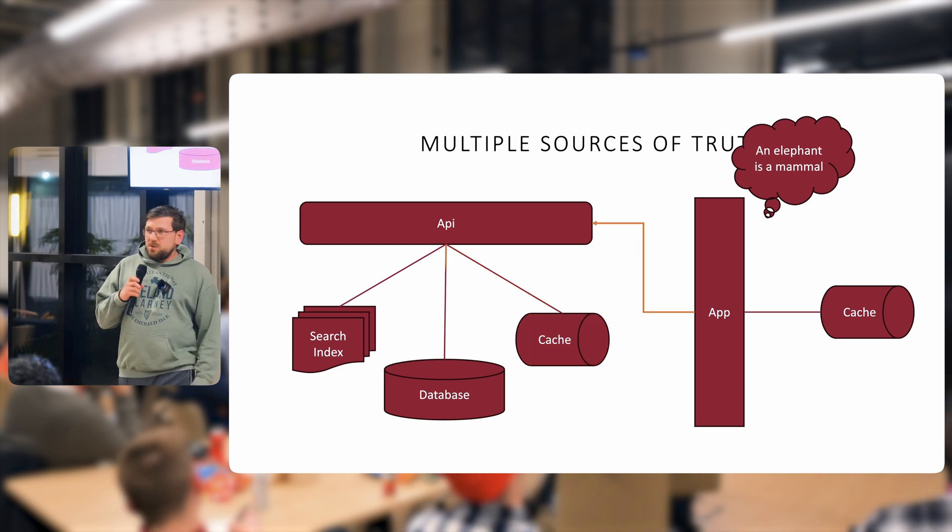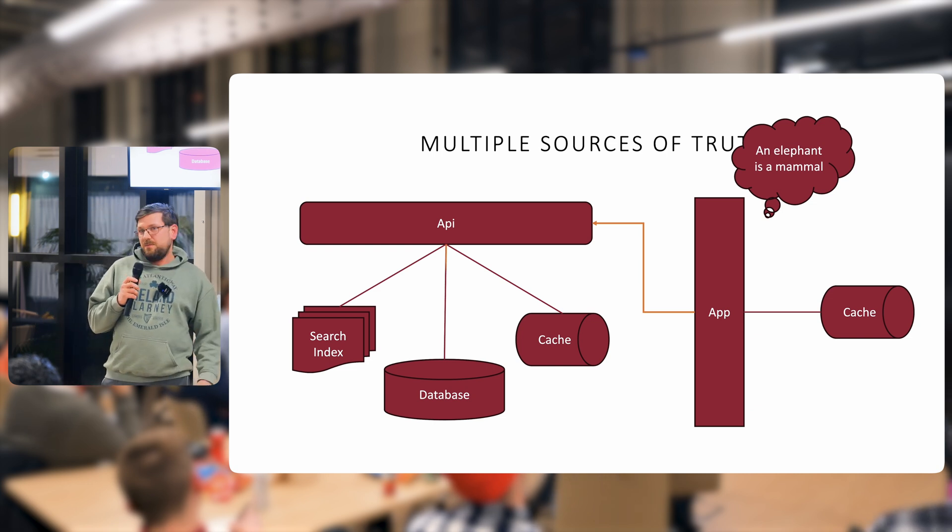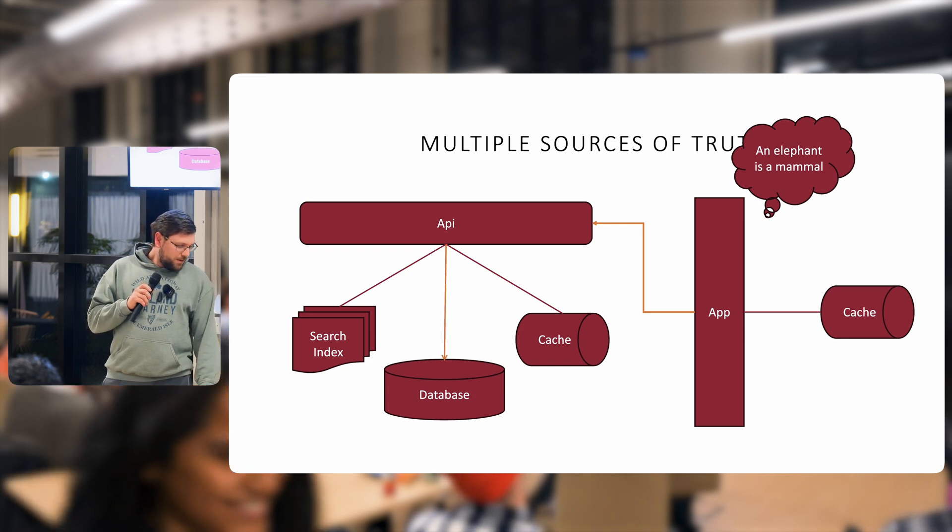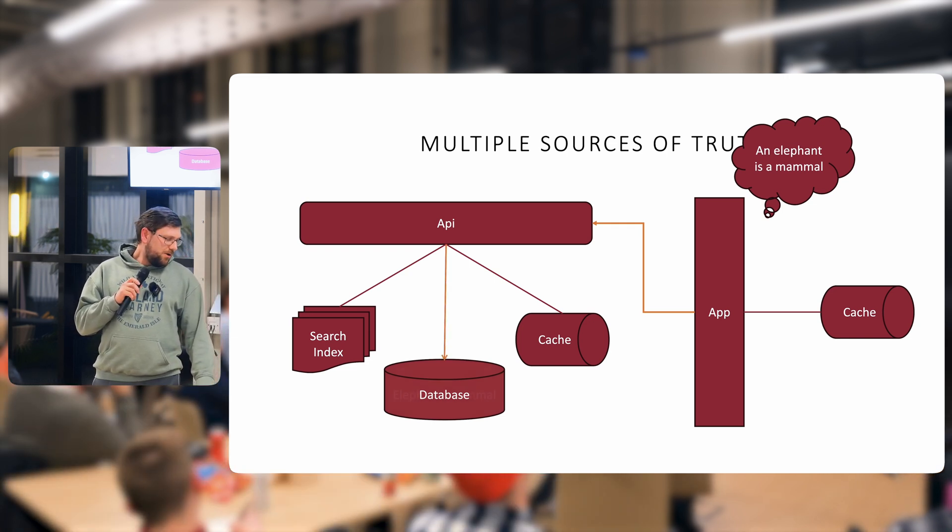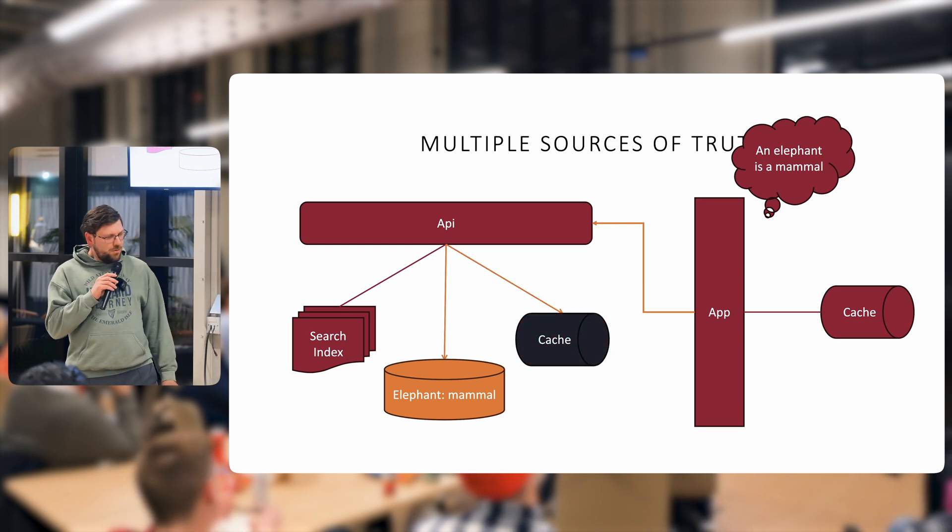So you say okay well why don't I just evict it, right? Instead of updating the cache, I can just evict the cache. So we'll send an API request. It'll update our database with elephant is a mammal and we'll evict the cache. No big deal.